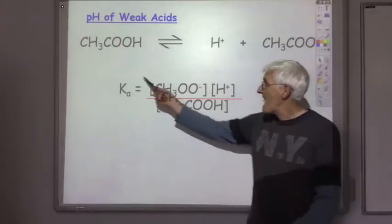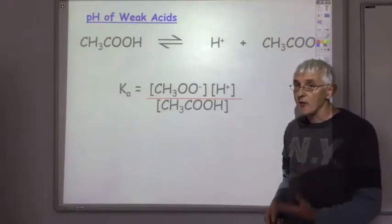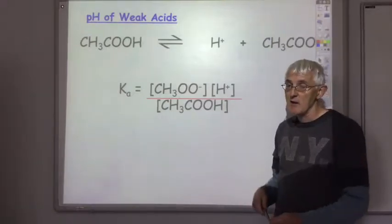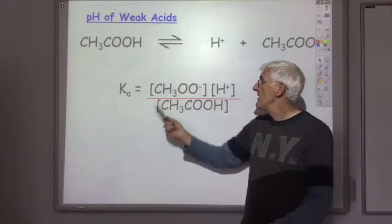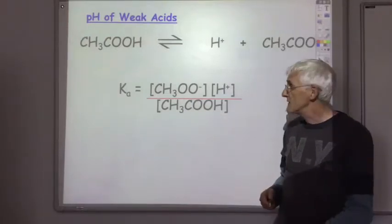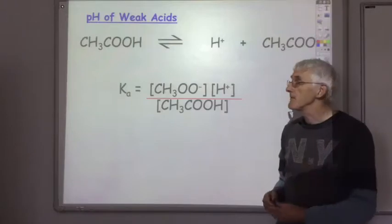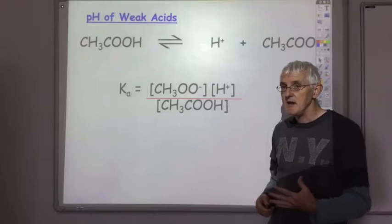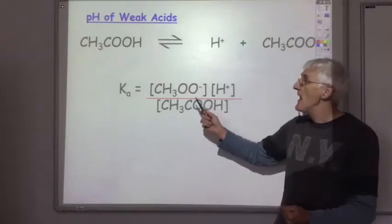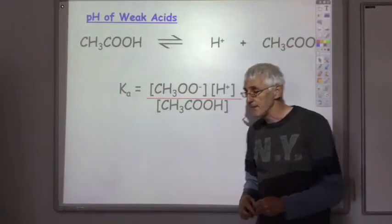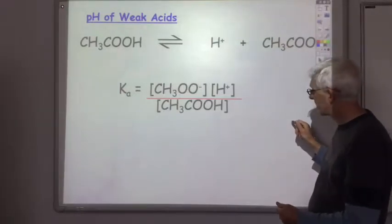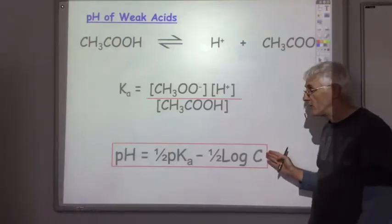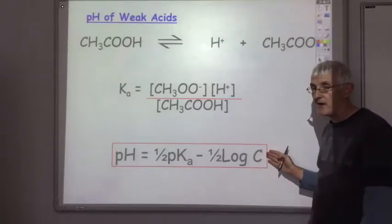If you've got a high Ka value, that means a lot of the ethenoic acid molecules dissociate, giving quite a lot of H+ ions. If you have a really low Ka value, not many molecules dissociate and you have a low concentration of H+ ions. So the H+ ion concentration and hence the pH depends on the Ka value and the concentration of the ethenoic acid, all captured in this equation which you'll find on the formula page of your data booklet.